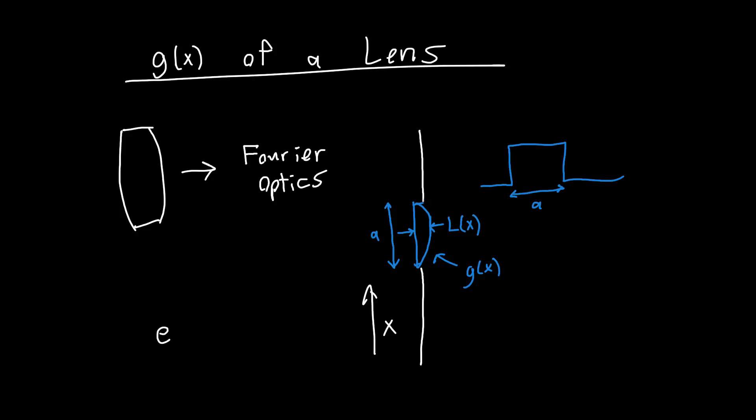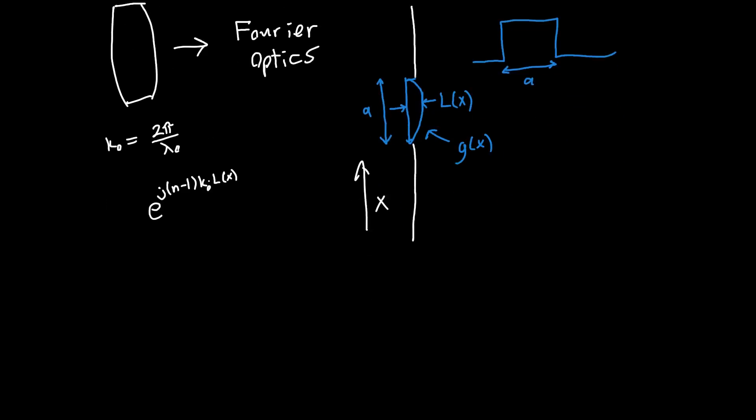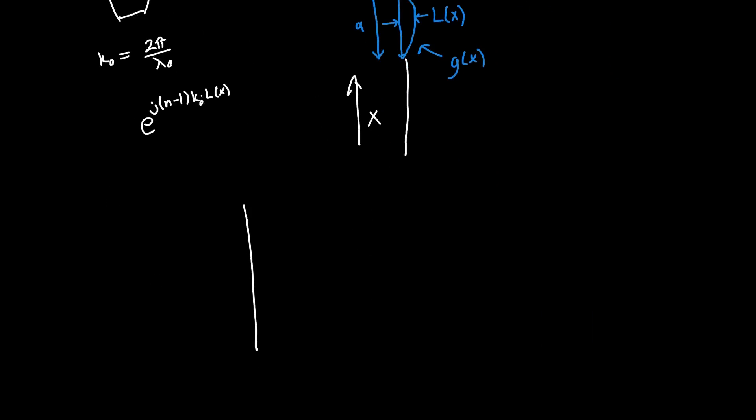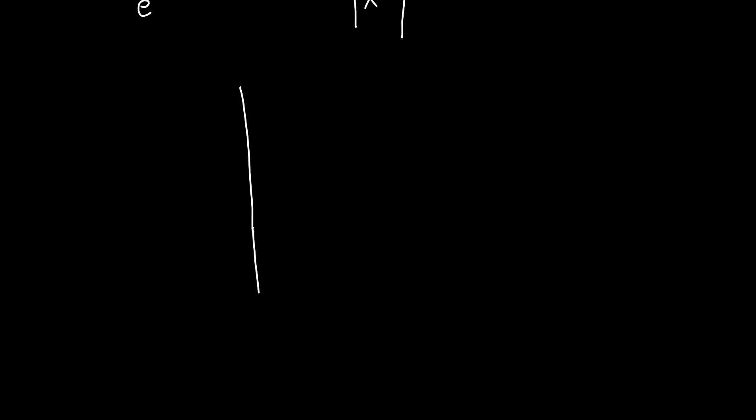We saw in the last video that the aperture function for some glass plate of thickness l is just e to the j n minus 1 k, where k is, let's call this k0, this is 2π divided by the wavelength in free space, times l as a function of x. So all we need to do is figure out what is l of x of this lens, or what is the length as a function of x.